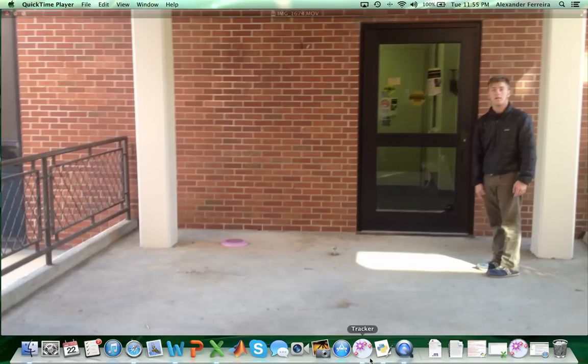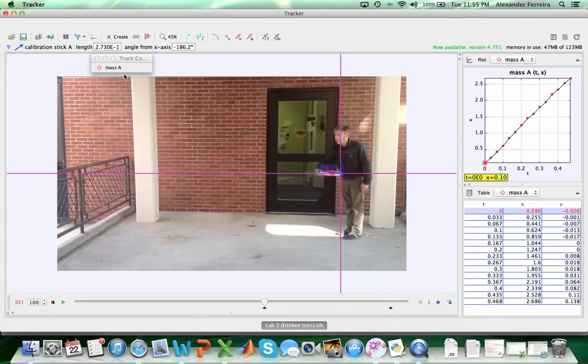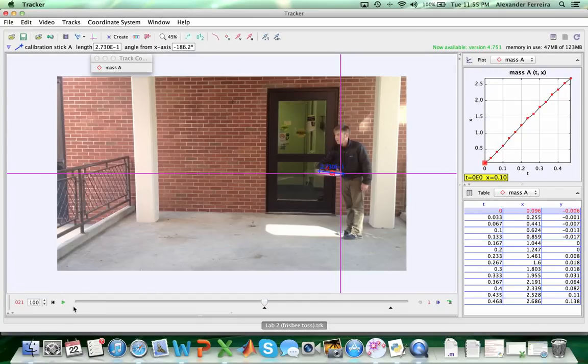So what I did was I took this video with my iPhone and then I brought it into this program that we all know, Tracker. And the first thing I did was I trimmed the video. The video originally was maybe 5 seconds long. But I trimmed it to get the part where the Frisbee was only in motion, from this black arrow to this black arrow.